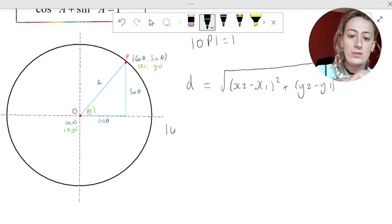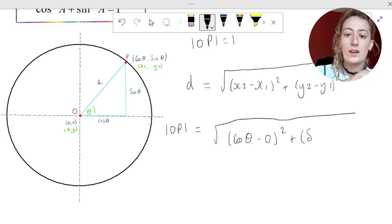So we have the distance O and P is equal to the square root of x2, which is cos theta minus x1, which is zero all squared, plus y2, which is sine theta minus y1, which is zero all squared.